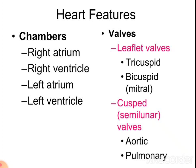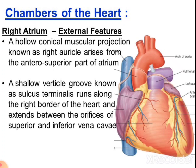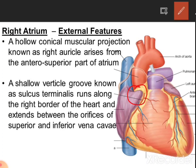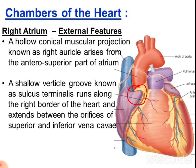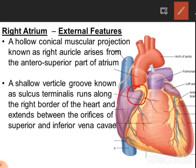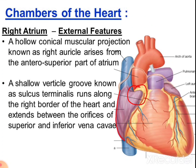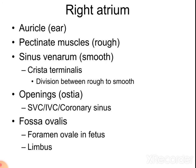The heart has four chambers and four valves: the tricuspid and bicuspid valves, and the aortic and pulmonary valves. Regarding the right atrium, its external features include a conical muscular projection known as the right auricle, which arises from the anterior superior part of the atrium. A shallow vertical groove known as the sulcus terminalis runs along the right border of the heart, extending between the orifices of the superior and inferior vena cava.